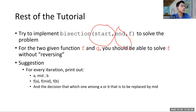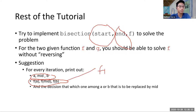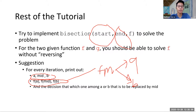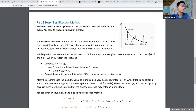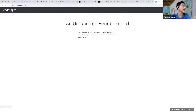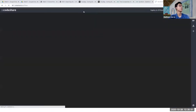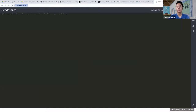With that, try to implement the bisection function with start, end, and the function. The suggestion: get `a`, `mid`, `b`, then get `f(a)`, `f(mid)`, `f(b)`. After this, decide whether `f(mid)` will replace `a` or `b`. I'm going to break you into breakout rooms, and once done, copy your answer to the code share.